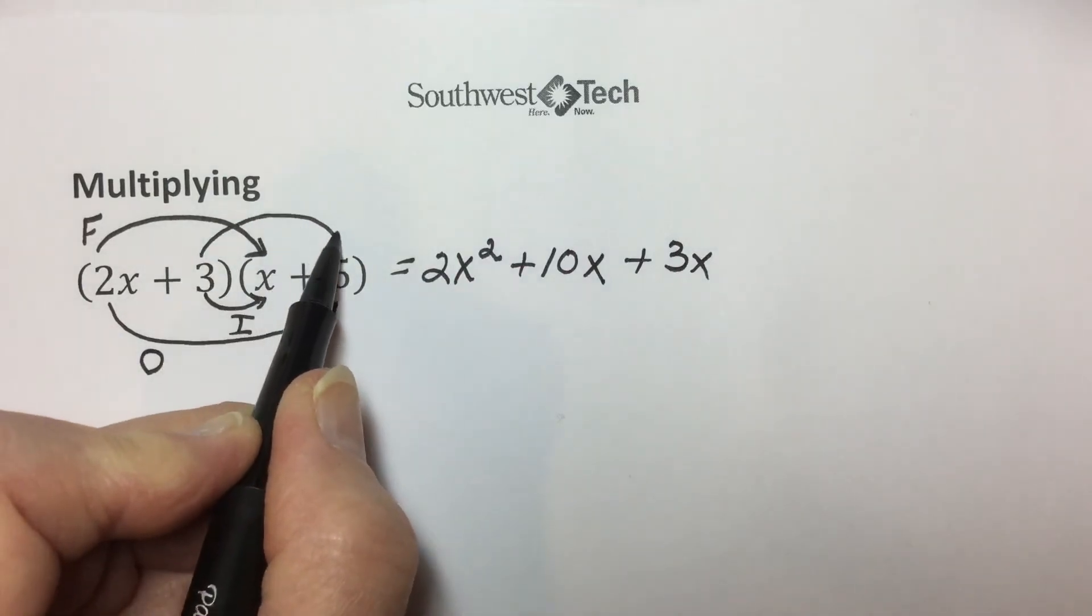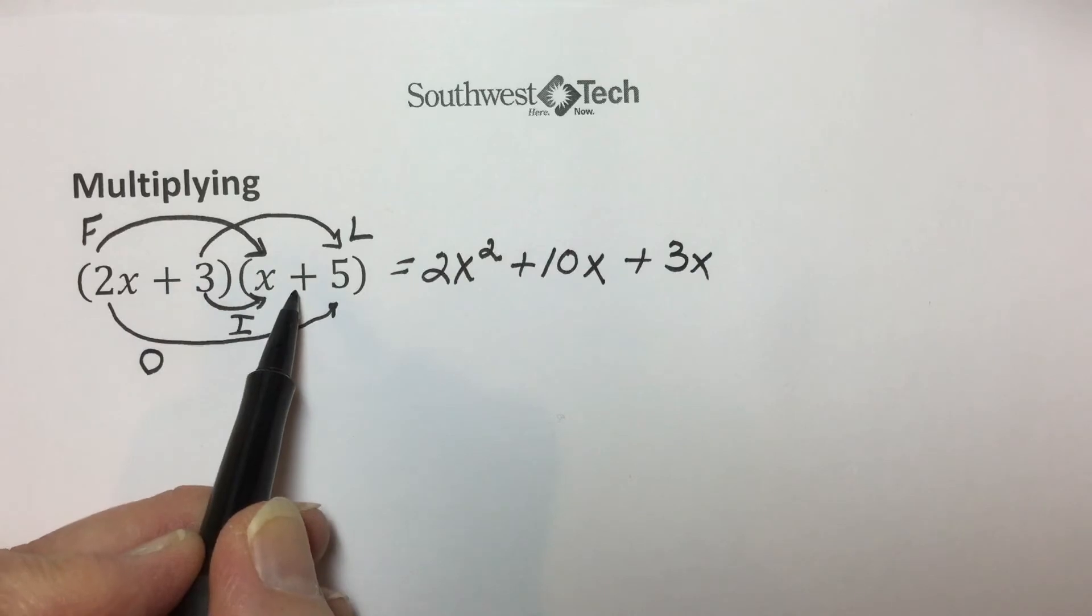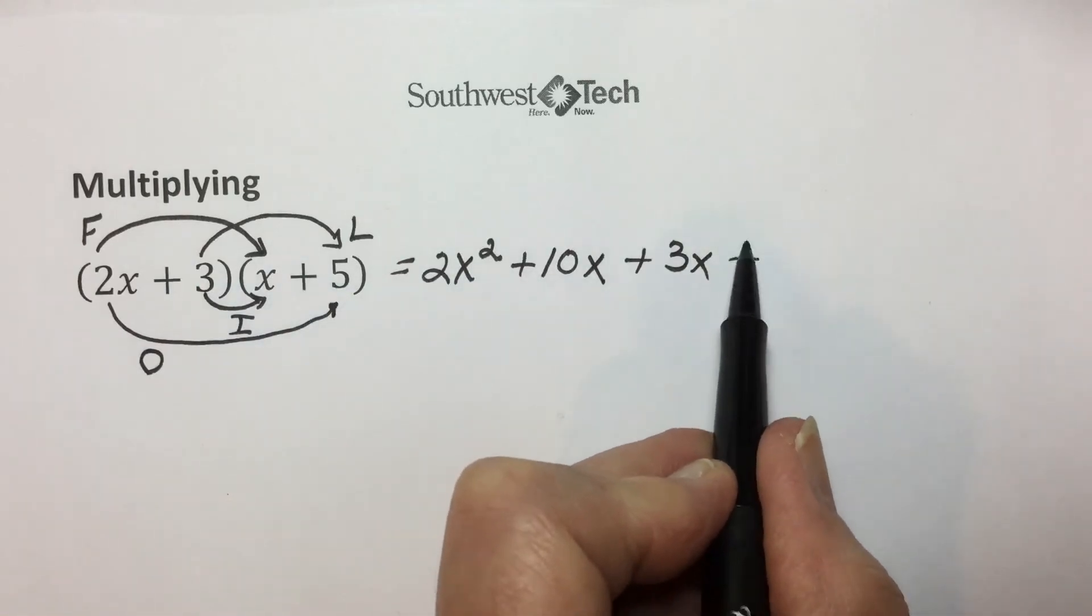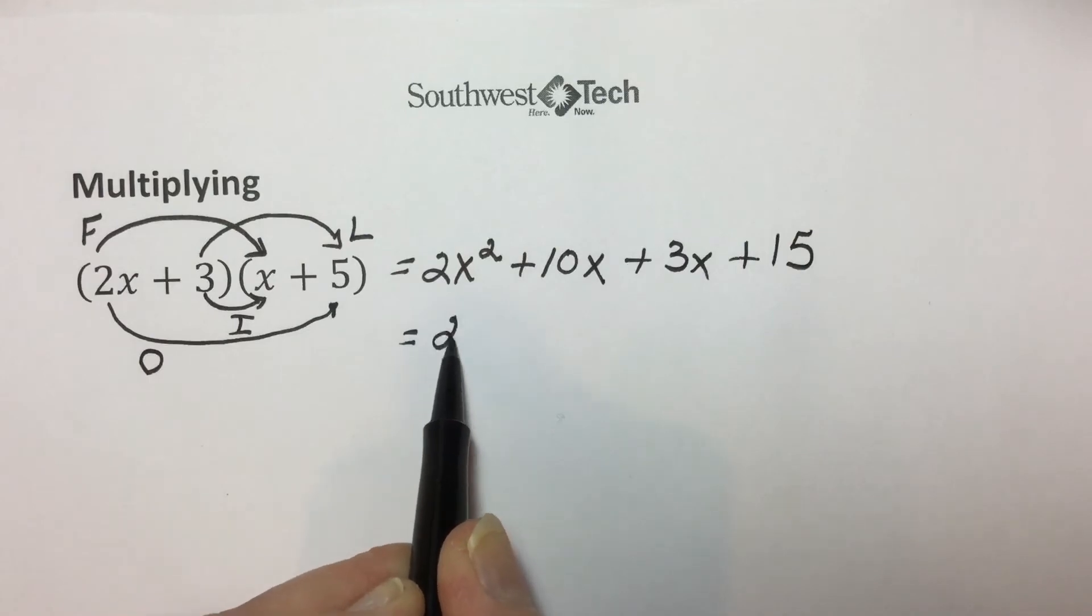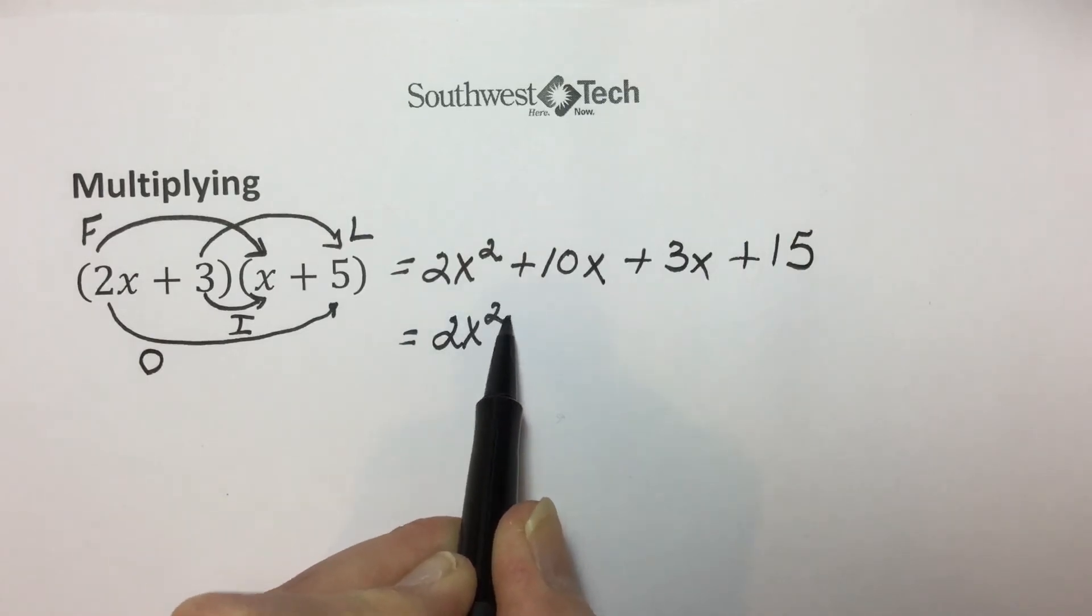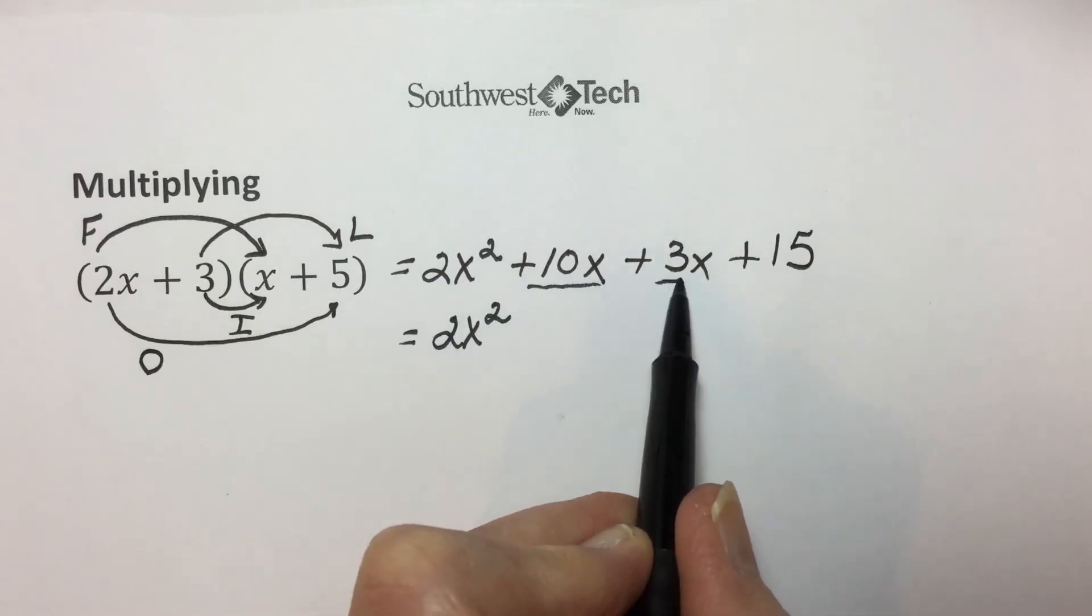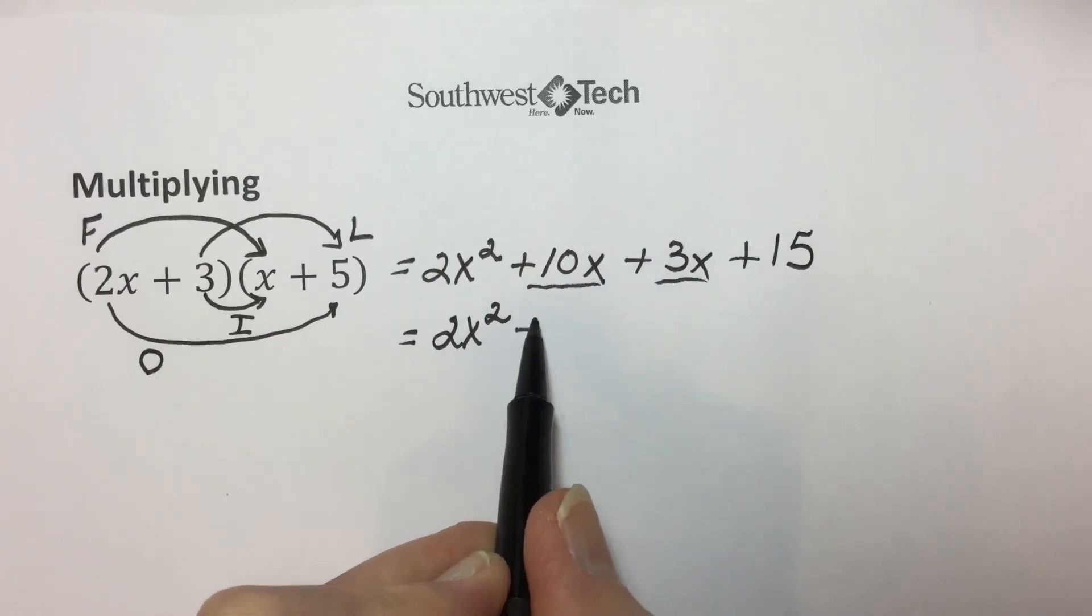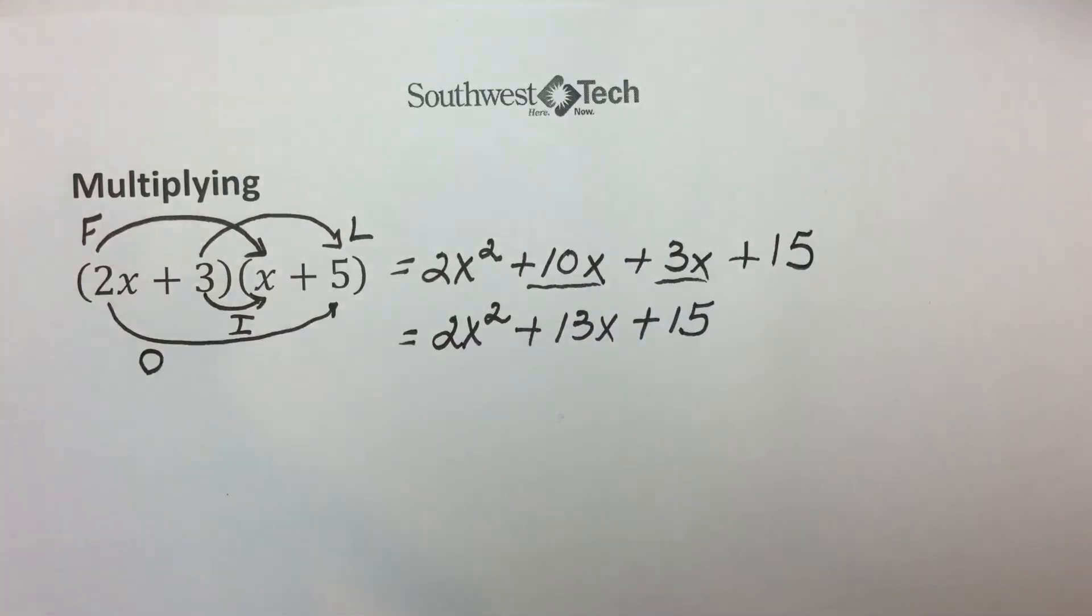And L for the last terms multiplied together, positive 3 times positive 5 is positive 15. Simplifying by combining like terms, we have no similar terms to the X squared, but positive 10 and 3 make 13X with the constant term of 15.